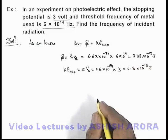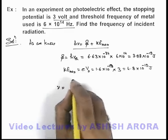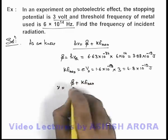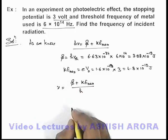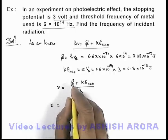So in this situation, we can directly write from this expression the frequency of incident radiation is phi plus maximum kinetic energy divided by Planck's constant h. On substituting the values, we'll get the frequency of radiation.